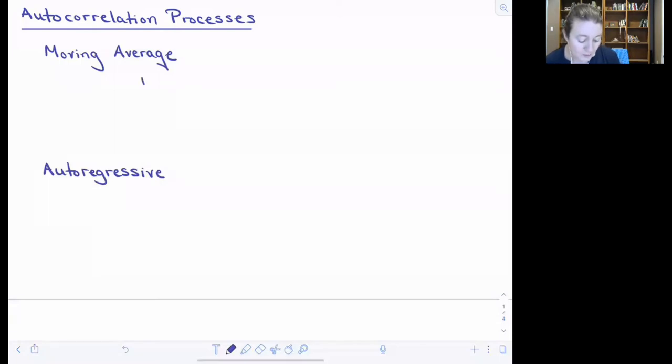The way you would write a moving average process as an equation for those who like that clarity of the math: this is what we've been calling our focal observation, our value of something at time t. The equation that generates that observation is the long-term average, the mean state of the system, plus the error at time t, however far it's being moved away from that central tendency,